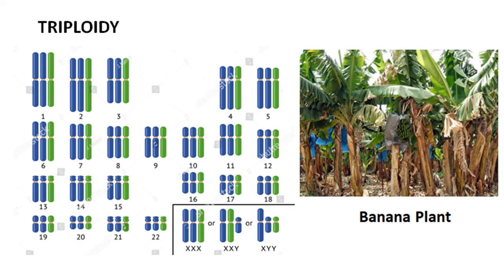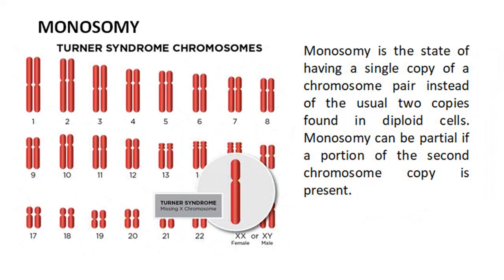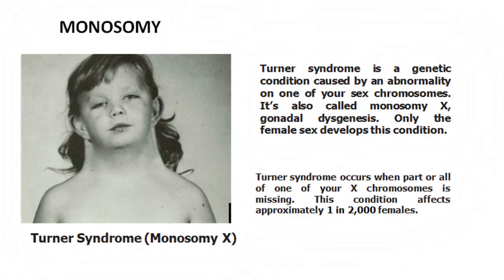Many triploid plants, such as the banana, are of great commercial value. While organisms with extra chromosomes often survive, organisms lacking one or more chromosomes usually do not. When a gamete with a missing chromosome is fertilized by a normal gamete, the resulting zygote will lack a chromosome. This condition is called monosomy. Examples include human females with only a single X chromosome. Zygotes with other types of monosomy usually do not survive.